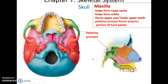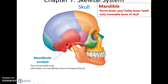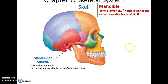The mandible is the only movable bone of the skull and holds the lower teeth — it is the lower jawbone. The rounded portion of the mandible that fits into the depression in the temporal bone is called the mandibular condyle. Together they form the only movable joint of the skull: the temporomandibular joint, with a right and left one.